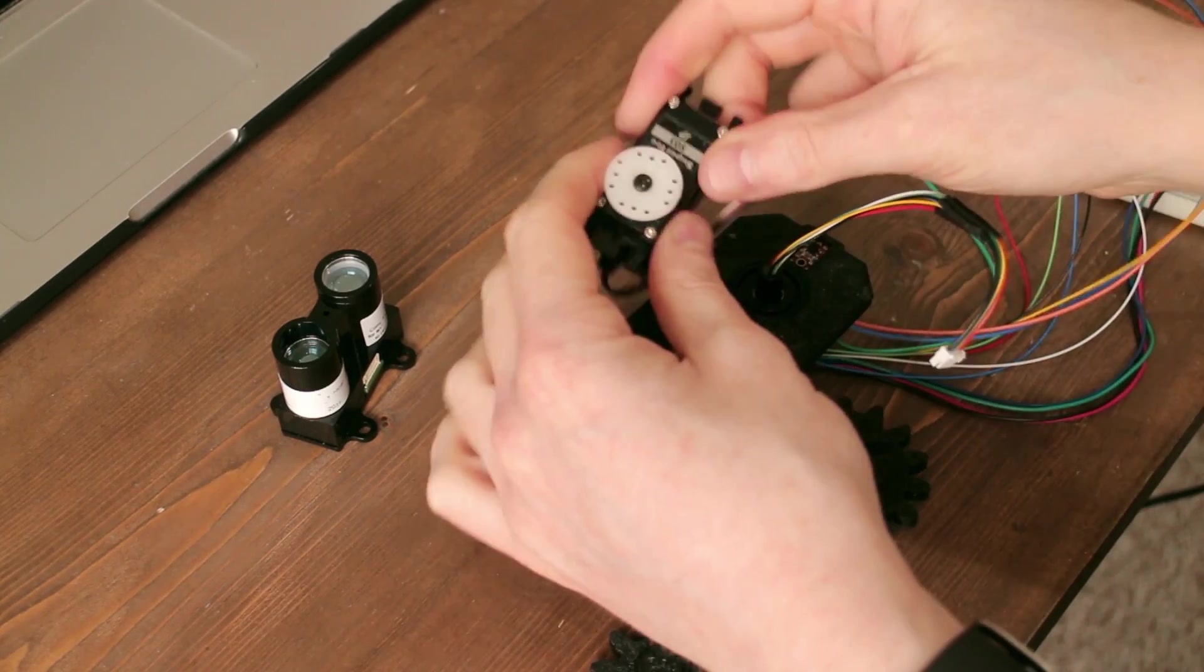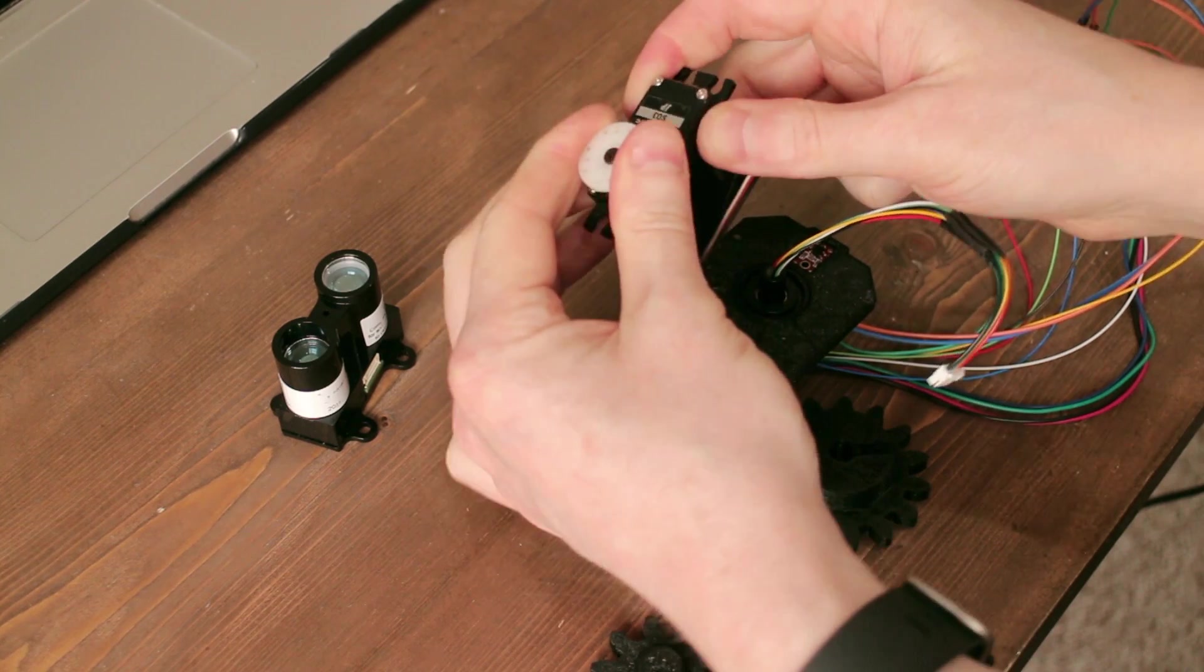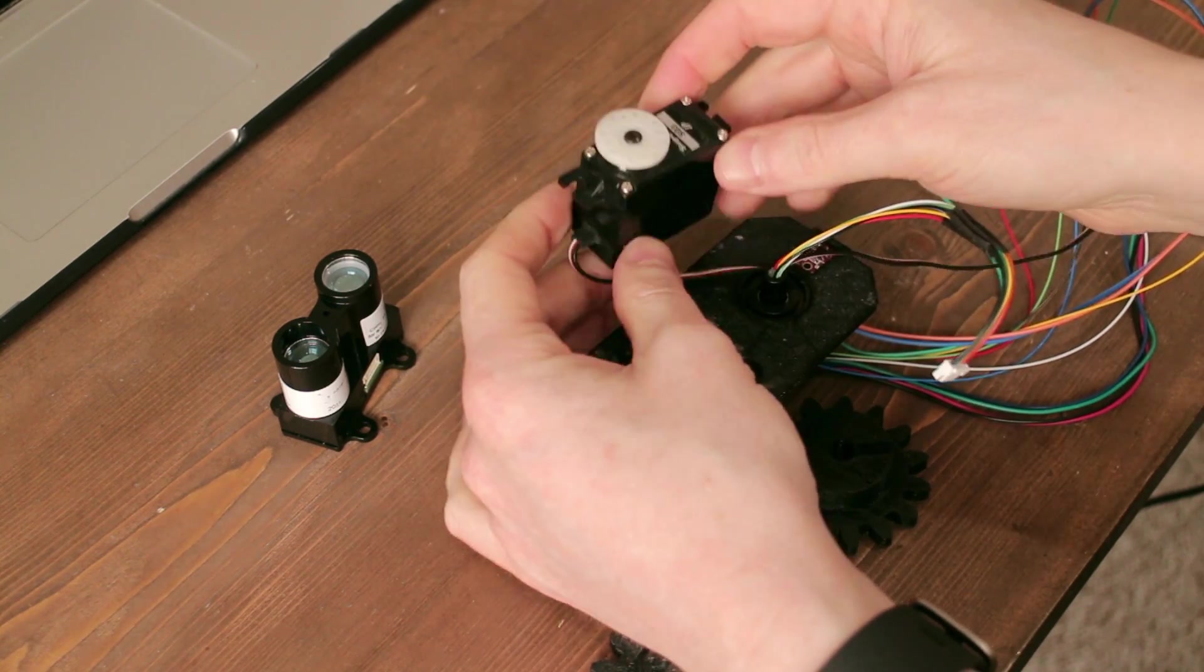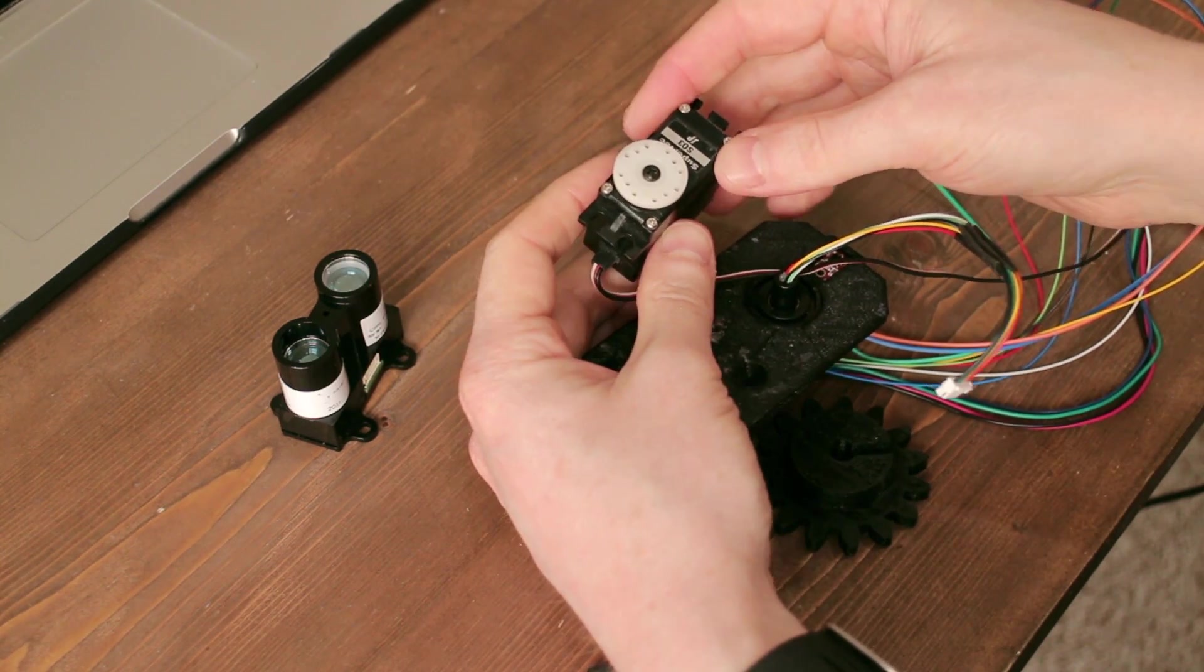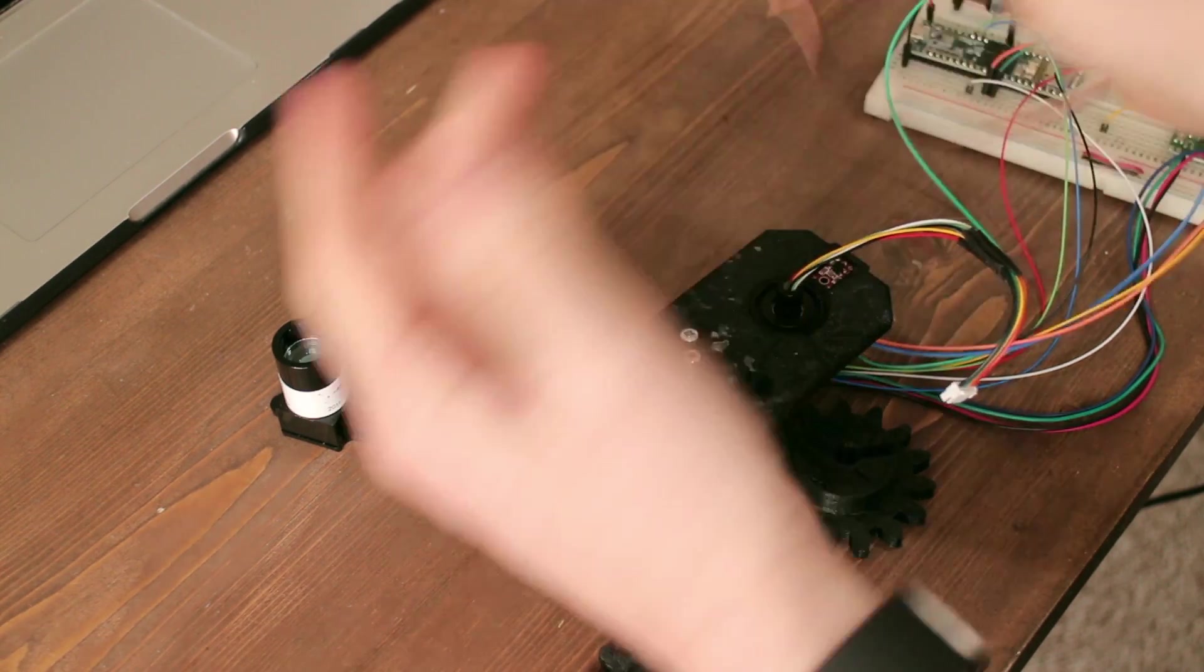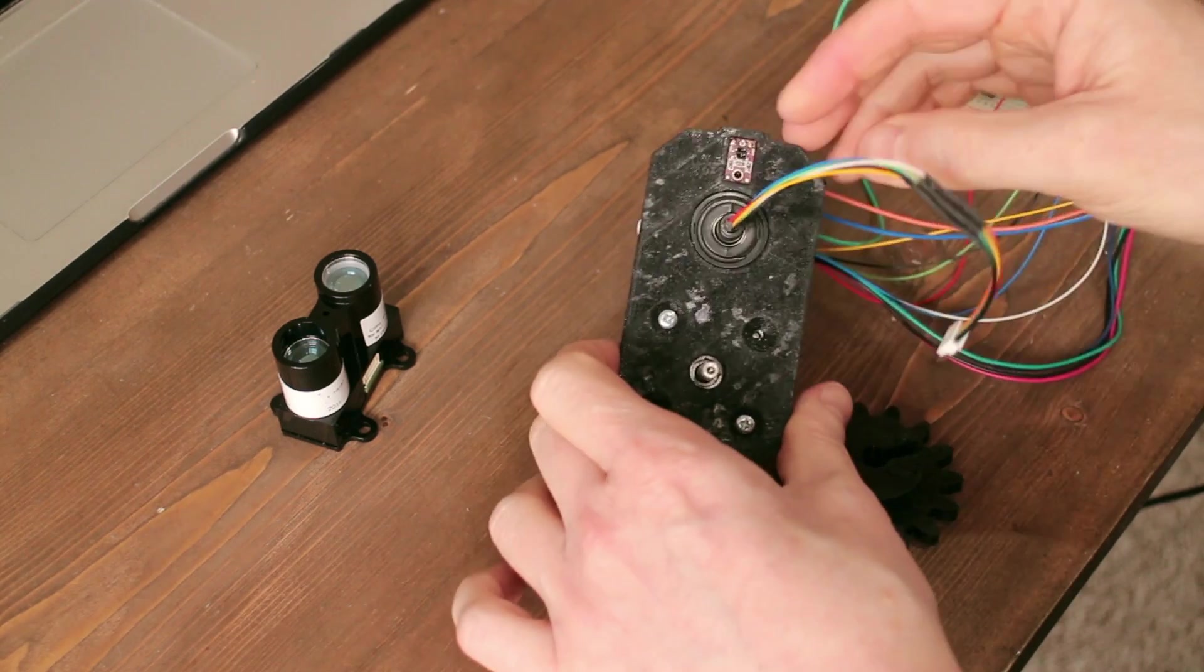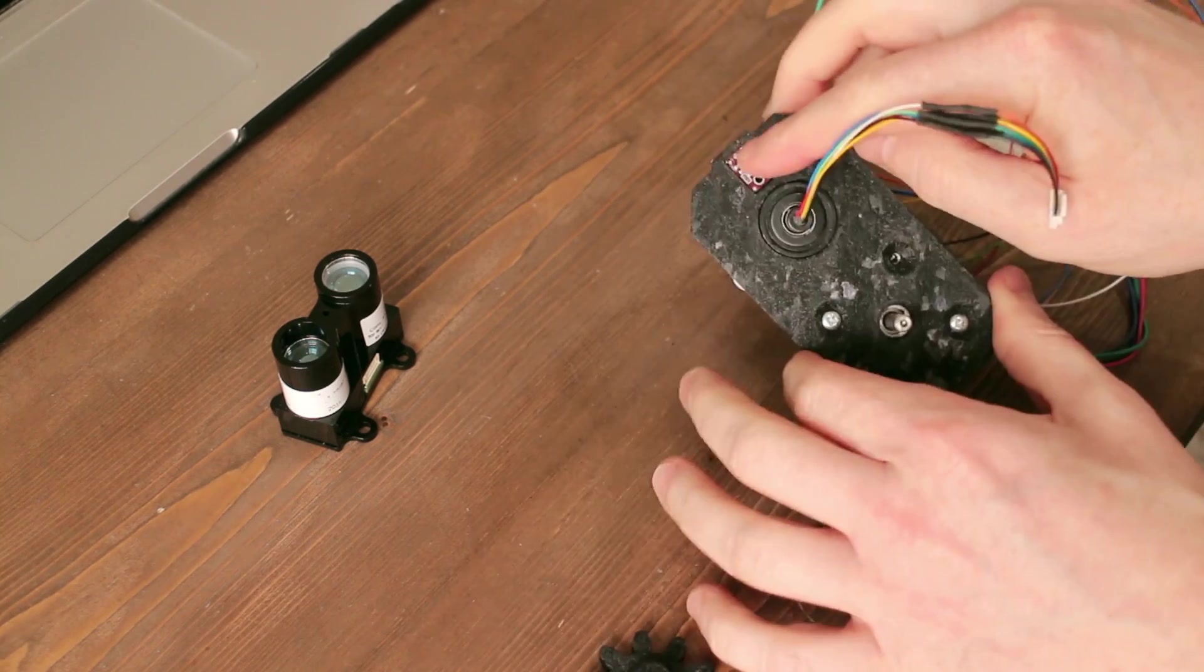One of the benefits of using a servo is that you always know what position it's in. It's got feedback and electronics built inside, so if you say go to the center point it will always return to that same center point. With a stepper motor you've got to do that yourself, which is what this little reflectance sensor is for.